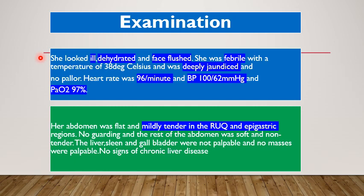On examination, she looked ill. She was dehydrated and face flushed. She was febrile with a temperature of 38 degrees Celsius and deeply jaundiced but no pallor. Her heart rate was 96 per minute, BP 100 over 62 mmHg, and partial arterial oxygen saturation was 97% on room air. Her abdomen was flat and mildly tender in the right upper quadrant and epigastric regions. There was no guarding and the rest of the abdomen was soft and non-tender. The liver, spleen, and gallbladder were not palpable, no masses palpable, and no signs of chronic liver disease were evident.